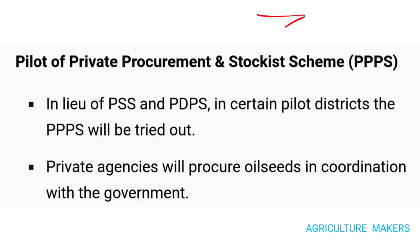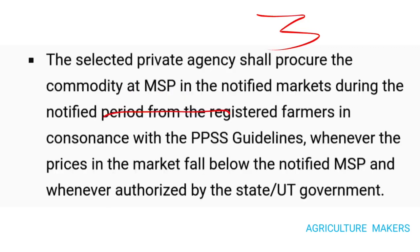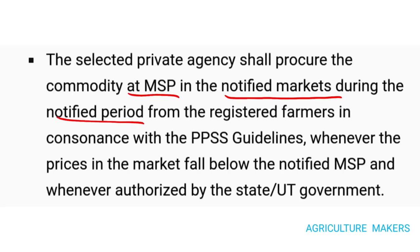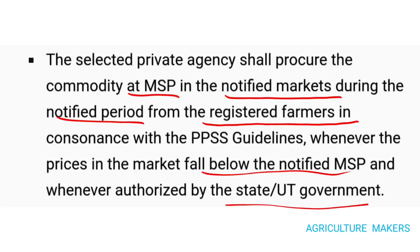The third component is the Pilot of Private Procurement and Stockist Scheme (PPPS). In case of failure of the PSS and PDPS in certain pilot districts, the PPPS will be tried out. Private agencies will procure the oil seeds in coordination with the government. The selected private agency shall procure the commodity at MSP in the notified markets during the notified period from registered farmers, whenever the market price falls below the MSP and it is authorized by the state or union territory government.